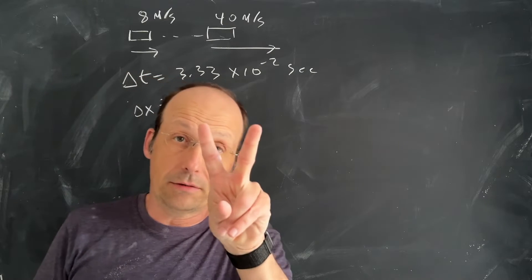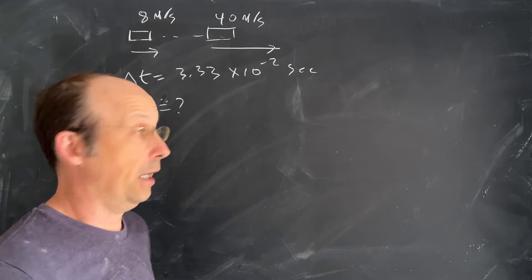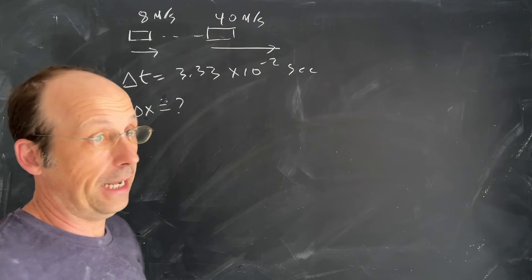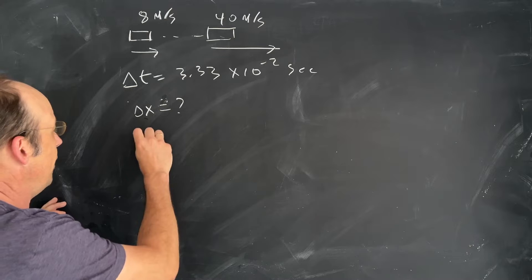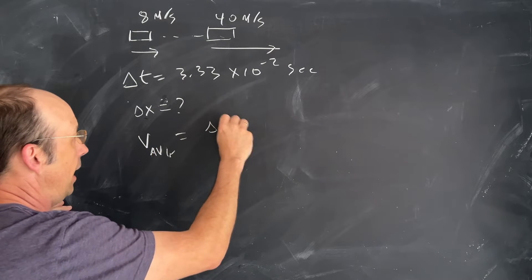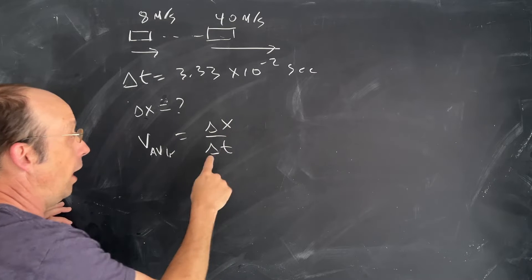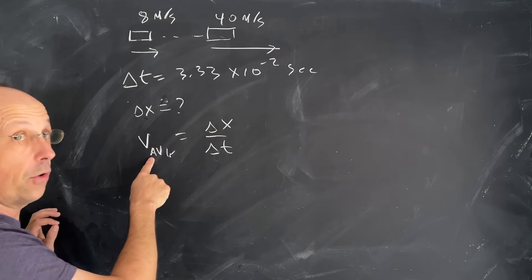Now, I'm actually going to do this two ways. I'm going to do it the way that I think makes the most sense. We're trying to find delta x here. So what if I said v average in one dimension is delta x over delta t? Well, I know delta t, I'm looking for delta x, but I don't know average velocity.